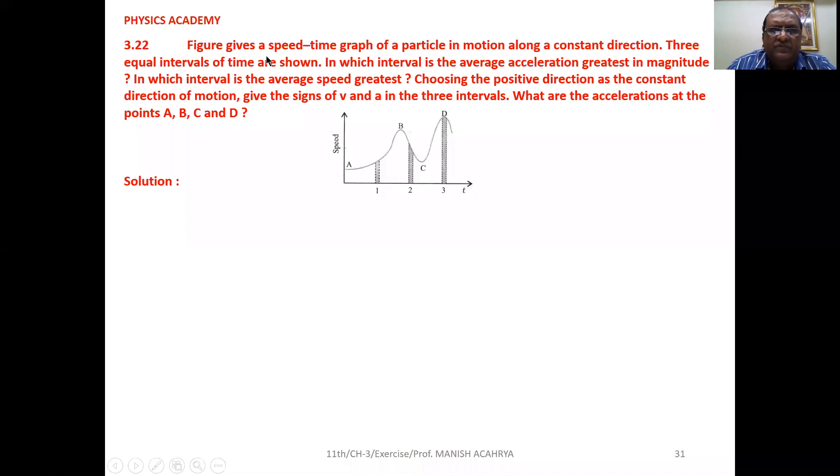Example 3.22: Figure gives a speed-time graph of a particle in motion along a constant direction. Three equal intervals of time are shown. In which interval is the average acceleration greatest in magnitude? In which interval is the average speed greatest?